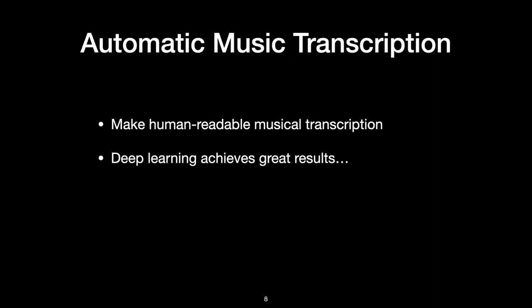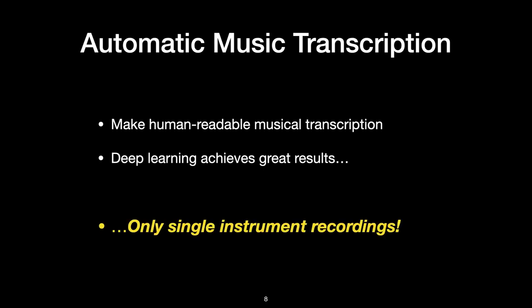The other task is called automatic music transcription. The goal of automatic music transcription systems is to create a human-readable transcription of the musical content of a recording. Despite this, most automatic music transcription systems are designed to transcribe a single monophonic, polyphonic, or percussive instrument, but many musical recordings contain multiple harmonic and percussive sources sounding simultaneously.